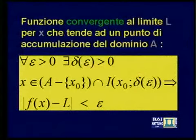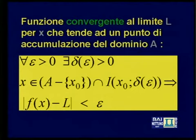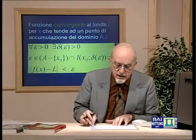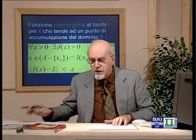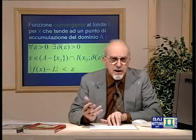Possiamo fissare anche sul monitor ciò che ho appena detto, che possiamo rileggere in maniera più elegante. Come ben si vede, l'insieme a cui appartiene x è abbastanza elaborato: è un'intersezione, precisamente l'intersezione fra A privato di x₀ e l'intorno di centro x₀ e raggio delta.